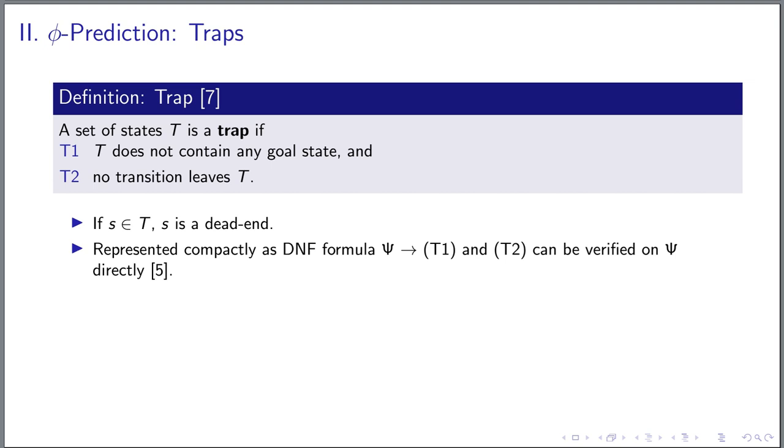Formally, a trap is a set of non-goal states that, once entered, cannot be escaped again. So by design, every state that is contained in some trap must be a dead-end. To use this notion in practice, the set of states is represented compactly as a DNF formula, which at the same time enables checking the trap conditions directly on this compact representation.